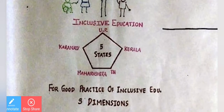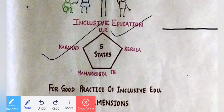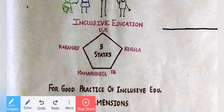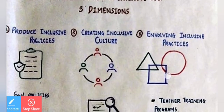Where did inclusive education first start? Inclusive education began in 5 states: Uttar Pradesh, Karnataka, Kerala, Maharashtra, and Tamil Nadu. These 5 states started inclusive education.